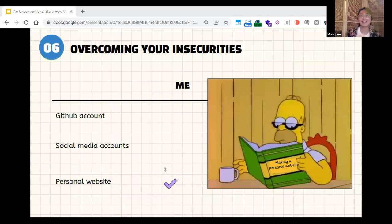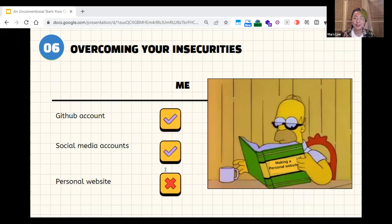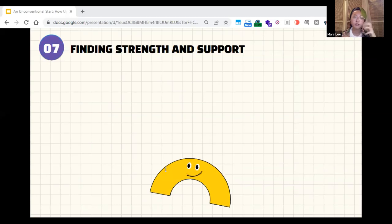Part six is actually overcoming your insecurities. And the secret is that we're all figuring it out. So even though I'm here giving a keynote, I don't have everything put together. In fact, as you can see here, I have a GitHub, I have Twitter, but I don't have a personal website. I know a lot of people who are more established in this space would have all these things. But so even though I'm a bit embarrassed, I'm showing you, hey, I'm still here. I'm also figuring it out and I'm still trying to move forward. And so if I can do it, you can do it.